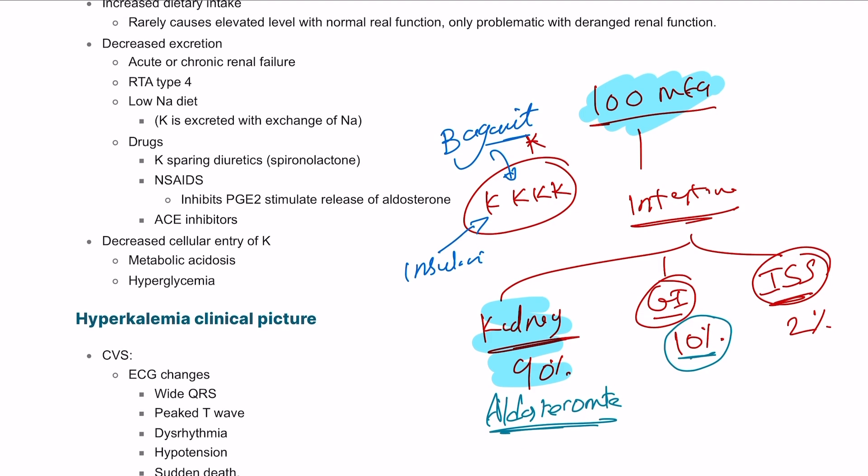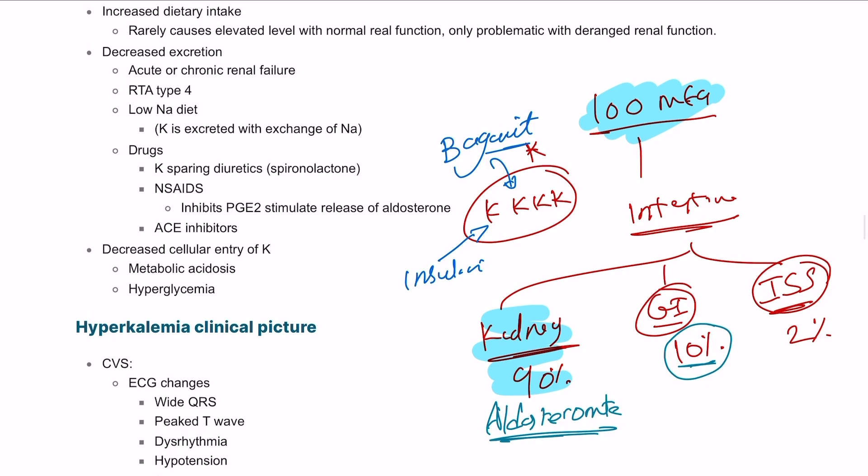If there is decreased excretion, this can happen if you have any issue with the kidney including chronic kidney injury, acute kidney injury, renal tubular acidosis type 4, or the patient is taking potassium sparing diuretics such as spironolactone, NSAIDs, or ACE inhibitors.